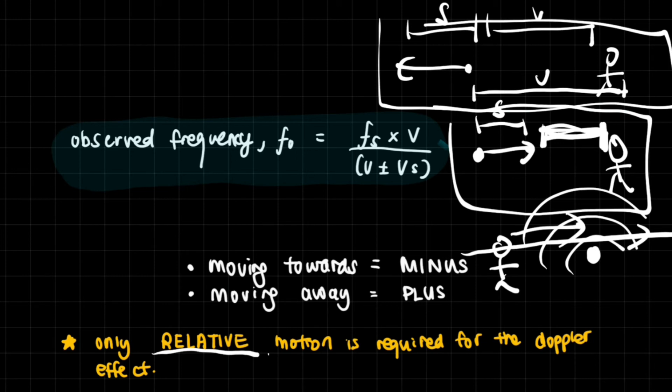Because you have to run very fast for that - you have to be as fast as a car, which is not really that feasible. But yes, it is possible. Only relative motion is required for the Doppler effect. The only reason why we hear it when the car moves past us but not when we run past the car is because we just can't run that fast.